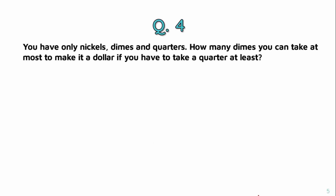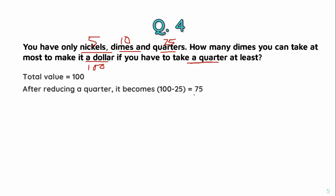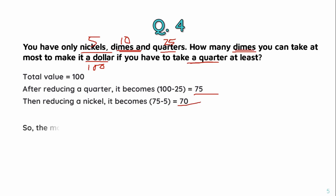Question number 4: you have only nickels, dimes, and quarters. How many dimes can you take at most to make a dollar, if you have to take at least one quarter? The minimum is one quarter worth 25 cents, leaving 75 cents. Dividing 75 by 10 gives 7 dimes — but with 5 cents remaining, we use a nickel. So the number of dimes is 70 divided by 10, which equals 7.